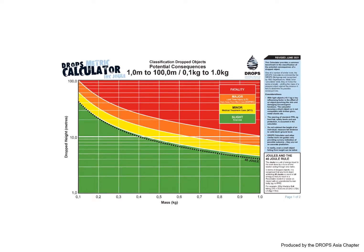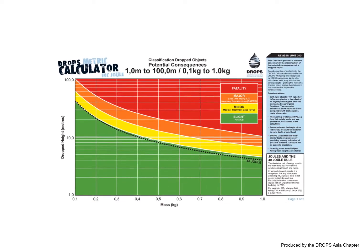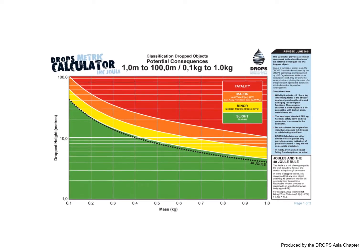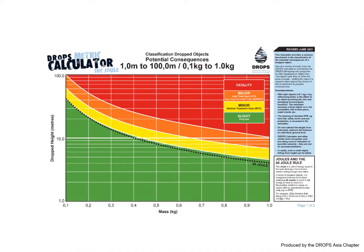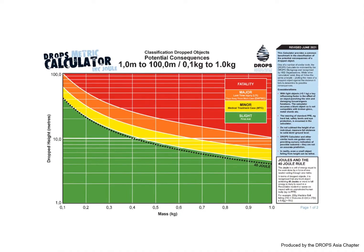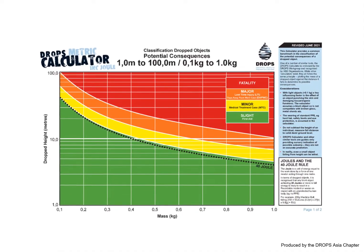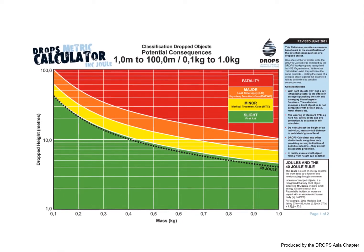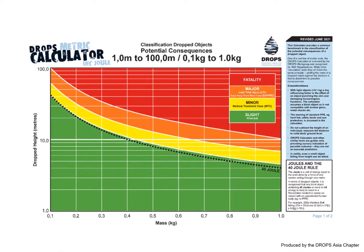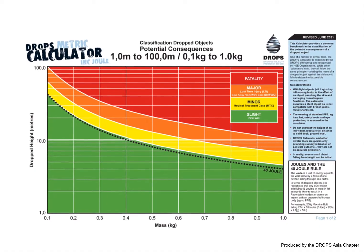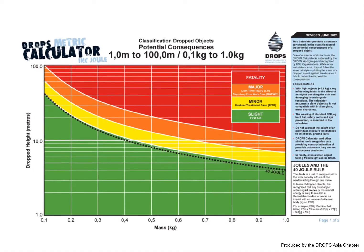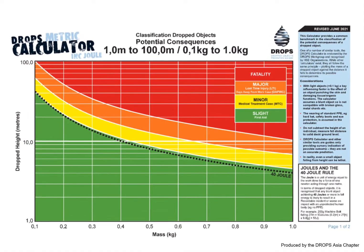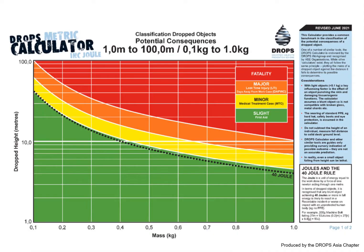Welcome to this tutorial on using the DropsMetric Calculator, a tool designed to assess the potential consequences of a dropped object in the workplace. Whether you're working at height or managing safety on-site, this calculator helps determine the severity of a potential incident.